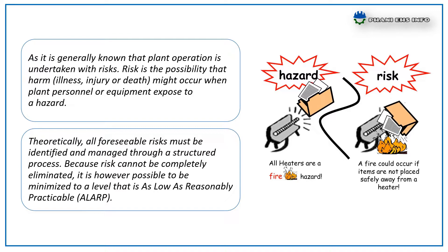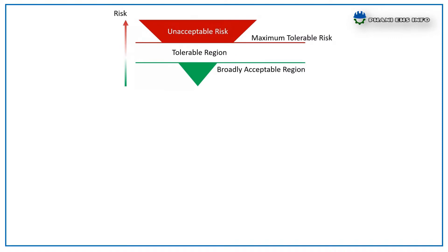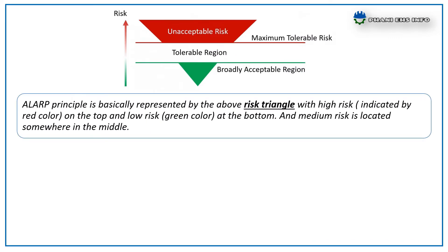Theoretically, all foreseeable risks must be identified and managed through a structured process. Because risk cannot be completely eliminated, it is however possible to be minimized to a level that is As Low As Reasonably Practicable. The ALARP principle is basically represented by a risk triangle, with high risk indicated by the red color on the top and low risk in green at the bottom, with medium risk located somewhere in the middle.